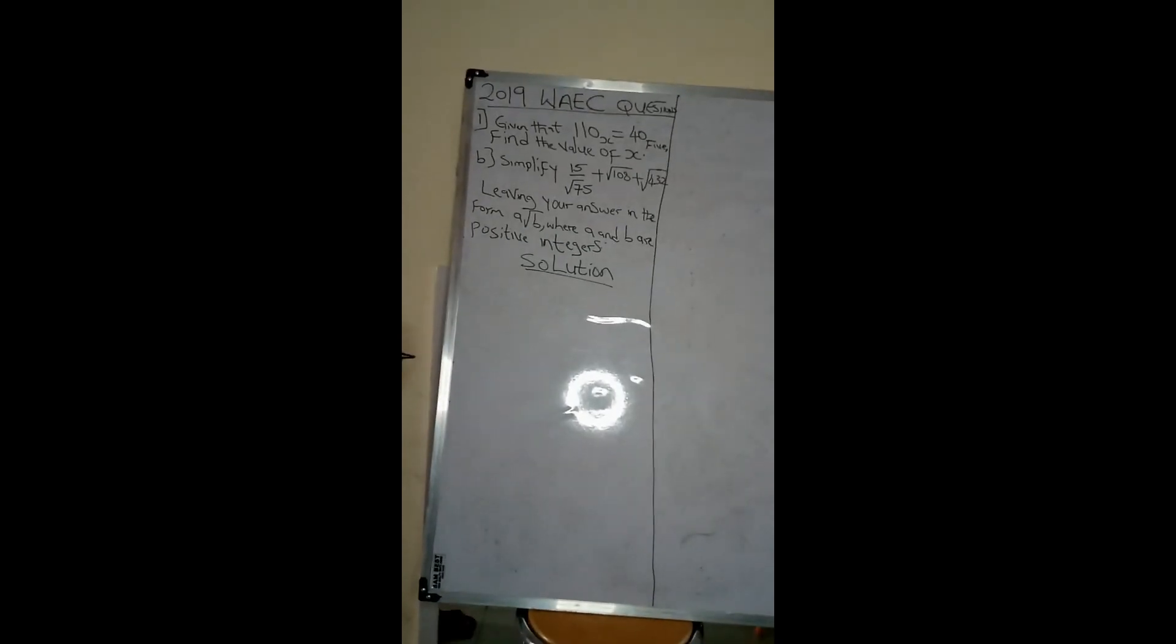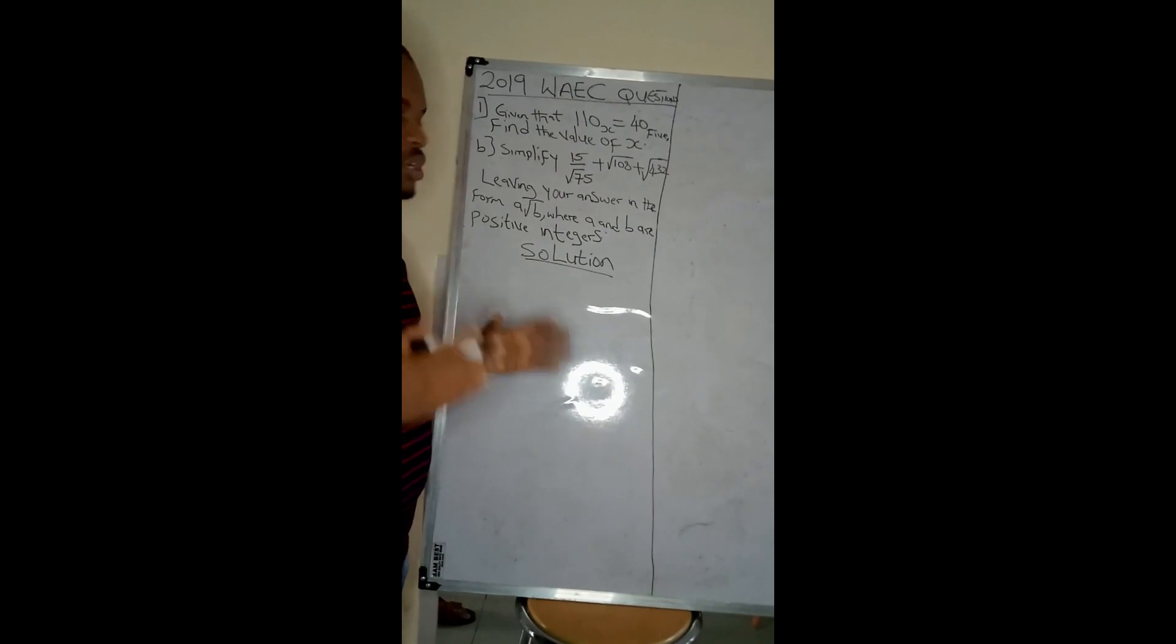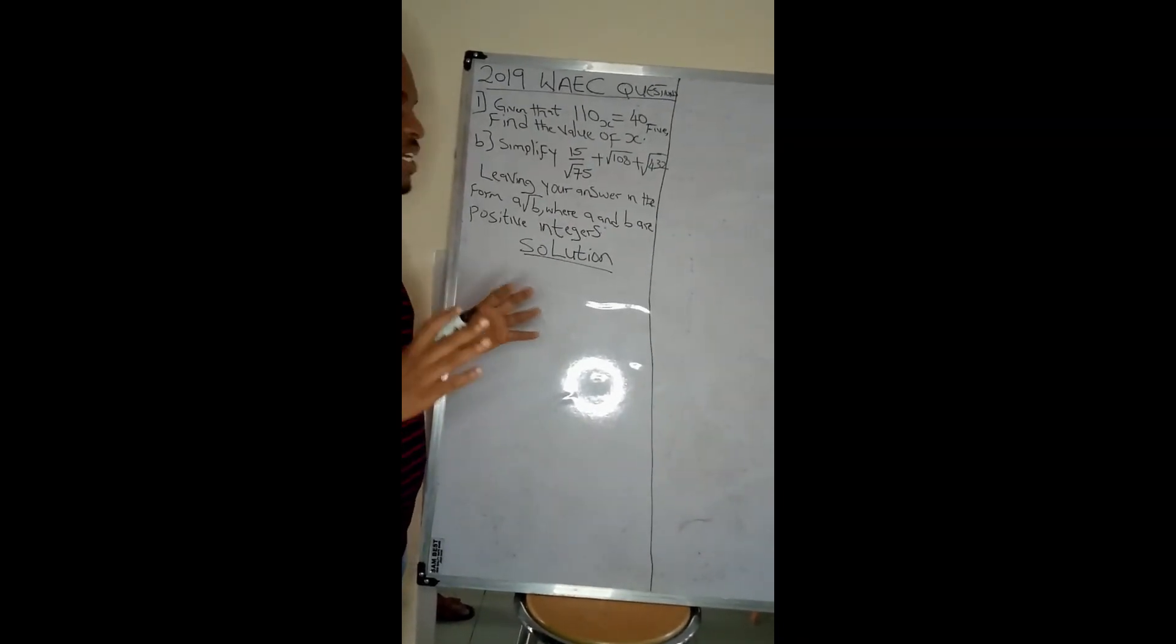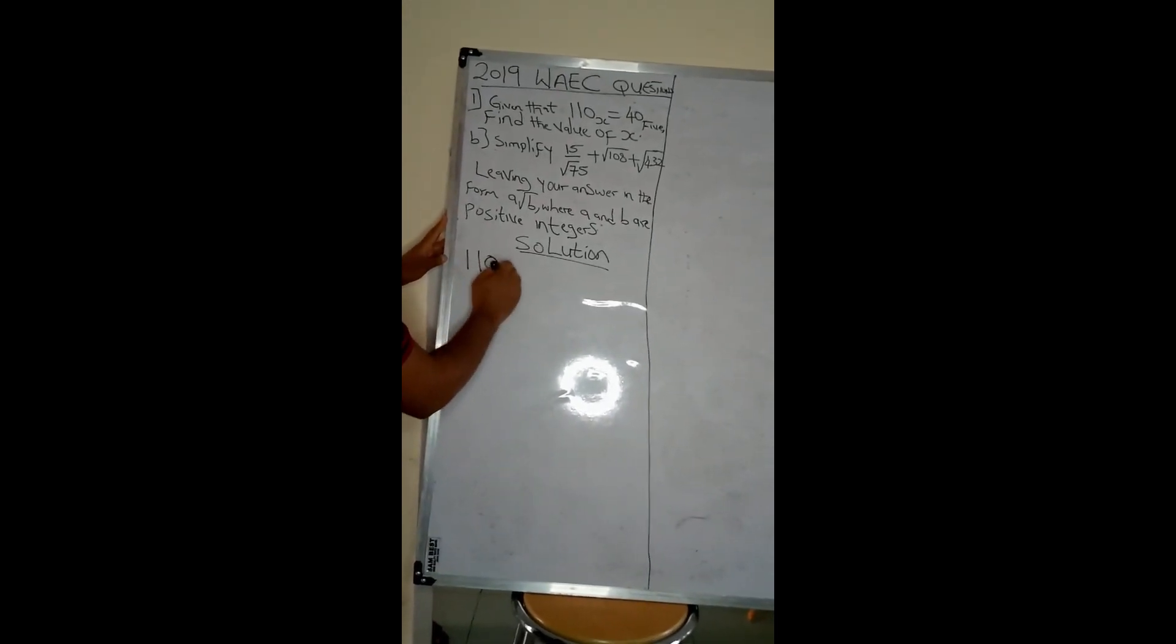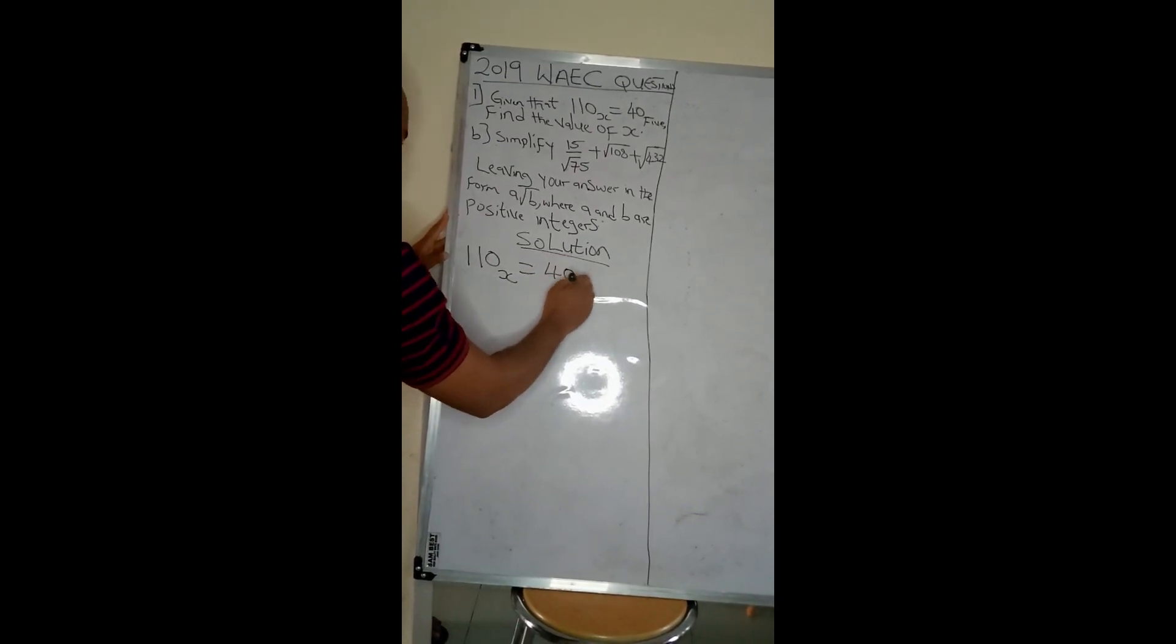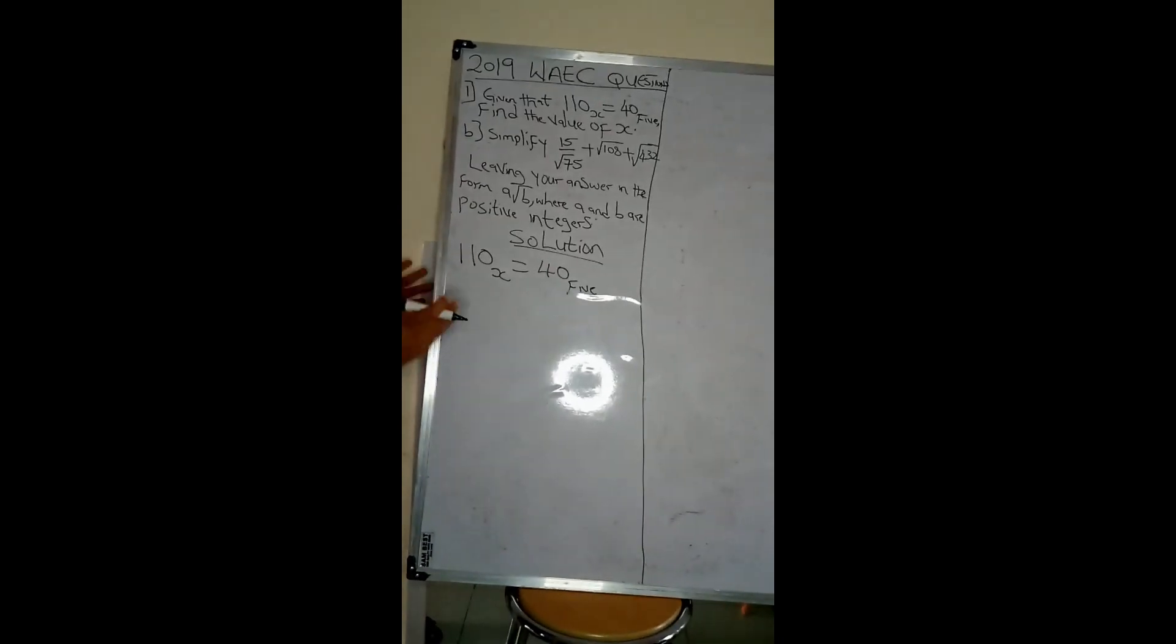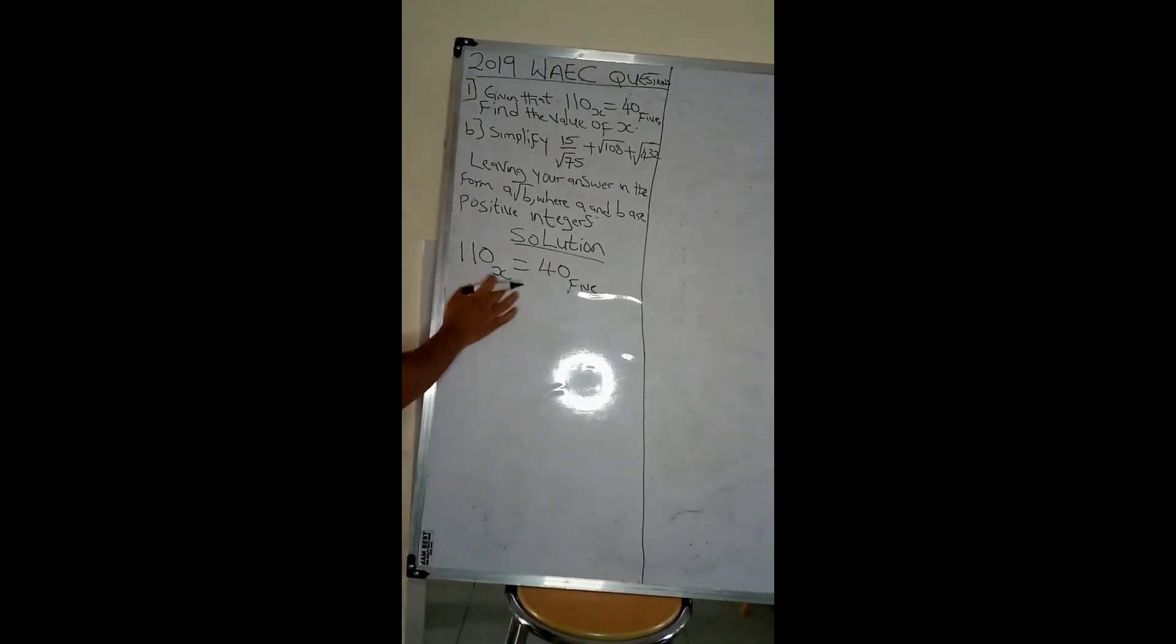Now recall that when we are doing number bases, I said when you are given two different number bases, to solve them you must first convert to the same number basis, and the easiest number basis to convert to is base 10. When converting to base 10, what do I do? I multiply by that base.